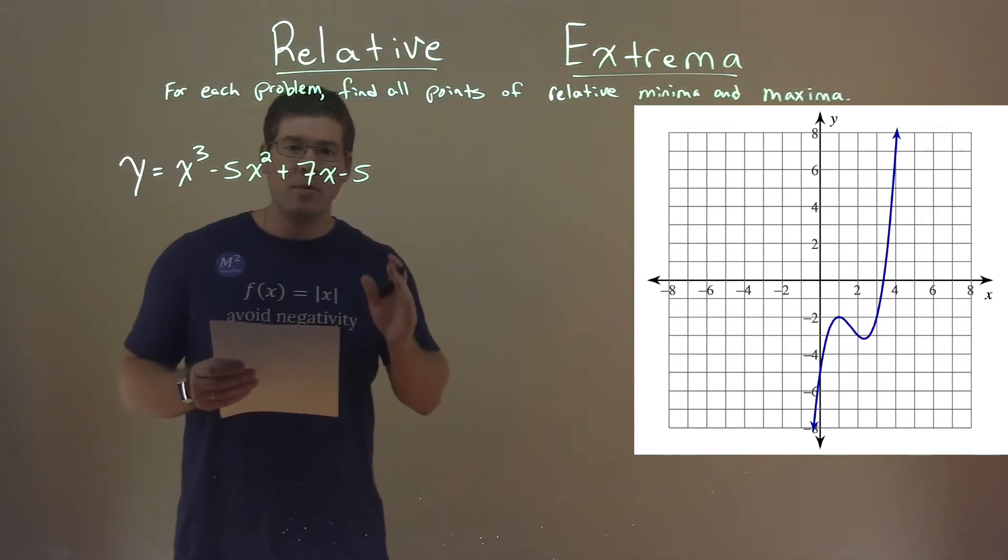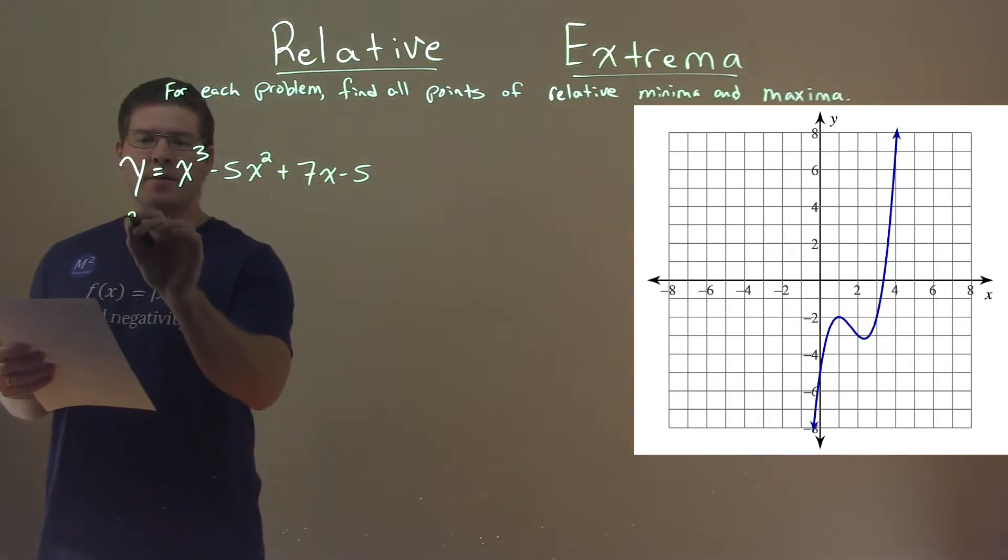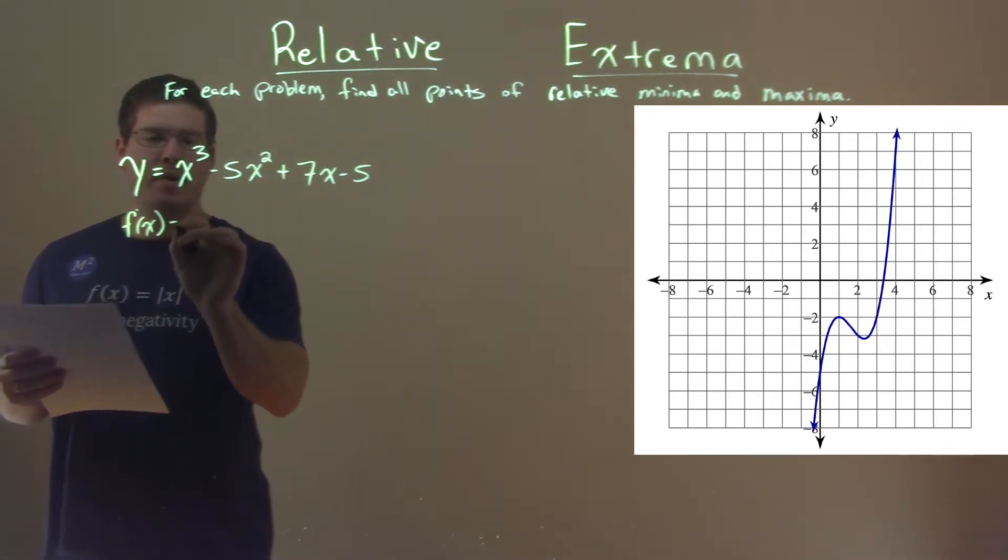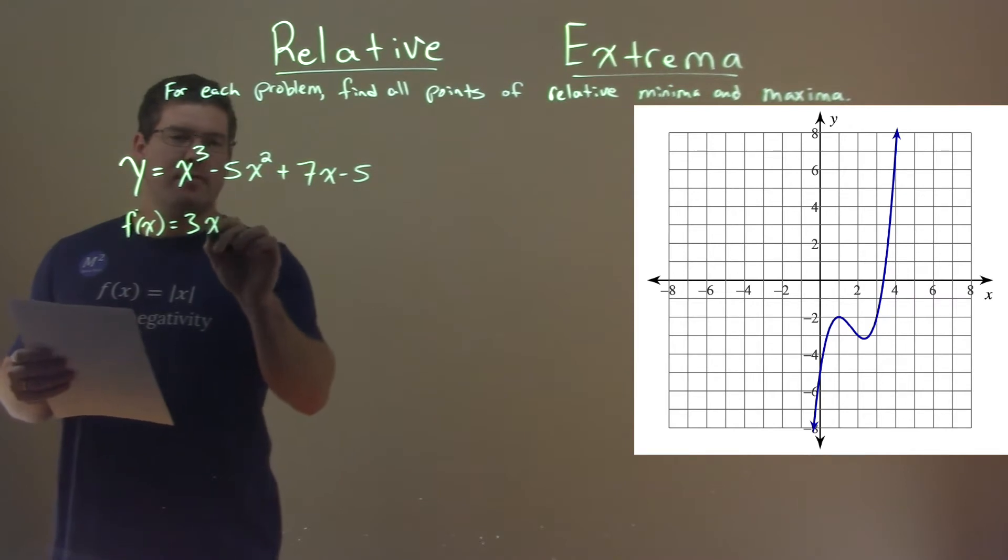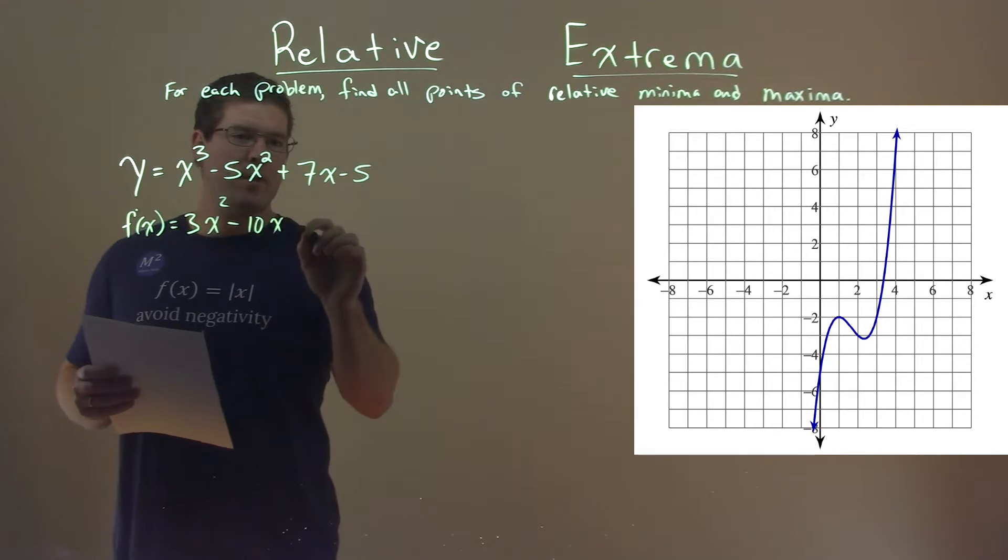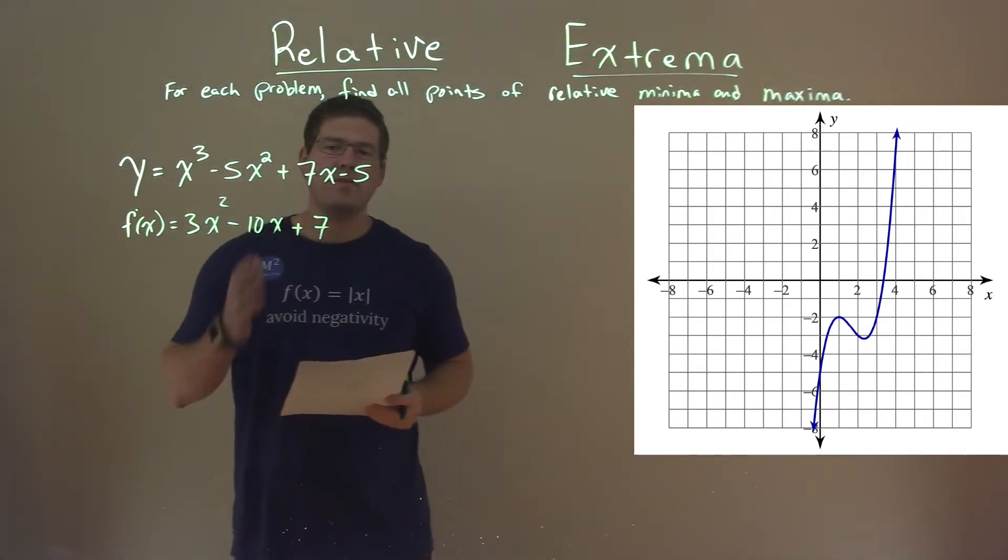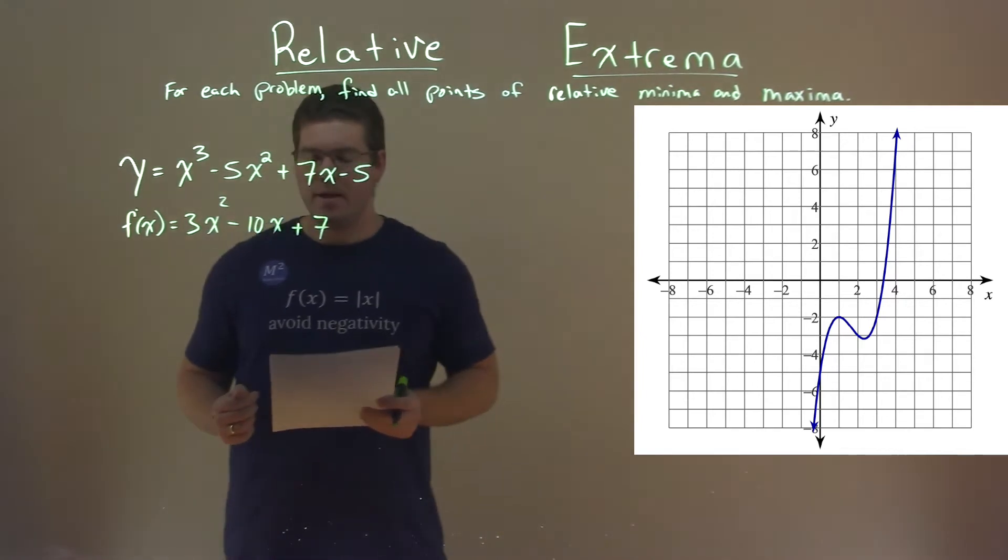So first thing I want to do is find the first derivative here. We use the power rule. F prime of x: 3 comes down, x squared. Minus 2 times 5 is 10x, and then we have plus just a 7. So the derivative is pretty easy to get right here.